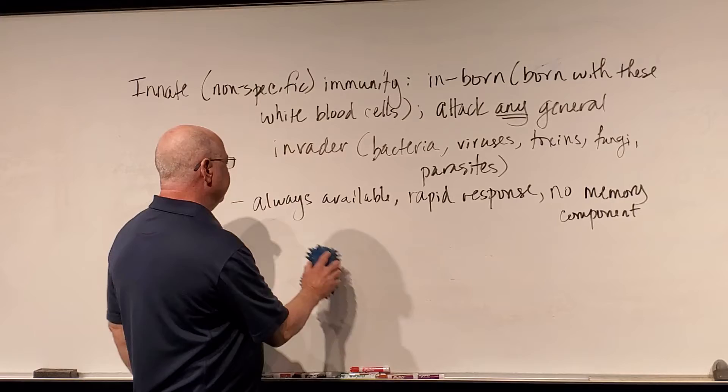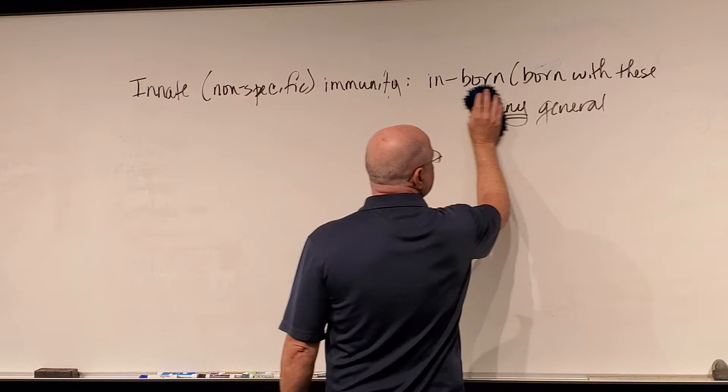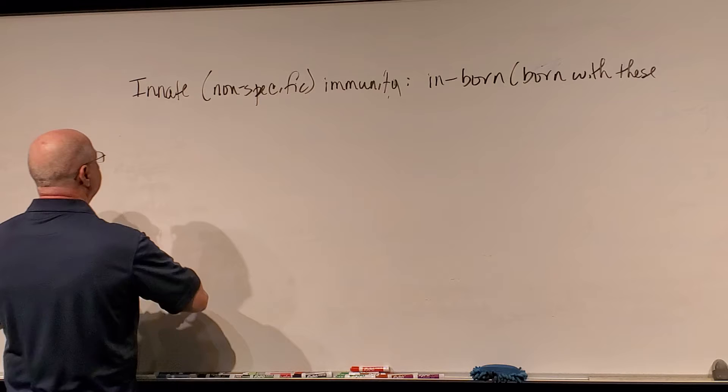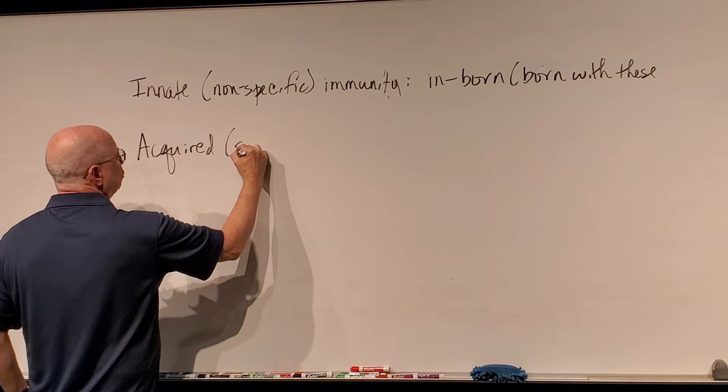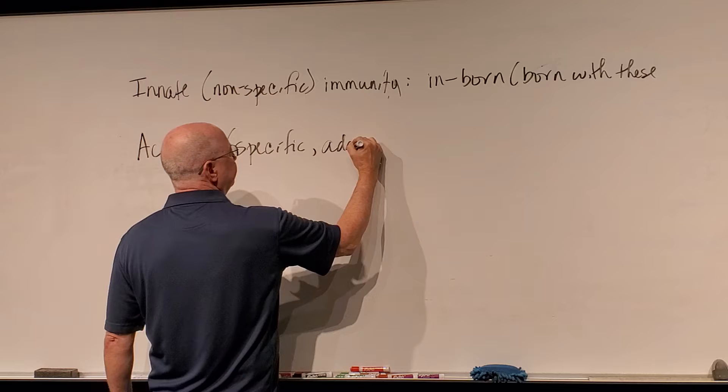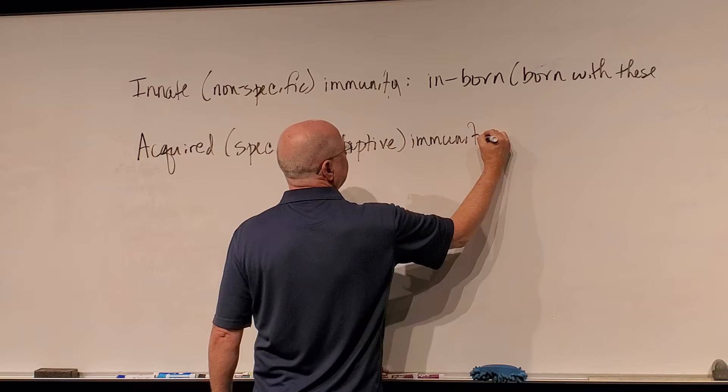Now we're going to talk about the opposite of innate immunity — what's called acquired immunity. Acquired immunity is also called specific immunity. It is also called adaptive immunity. It goes by all three names.